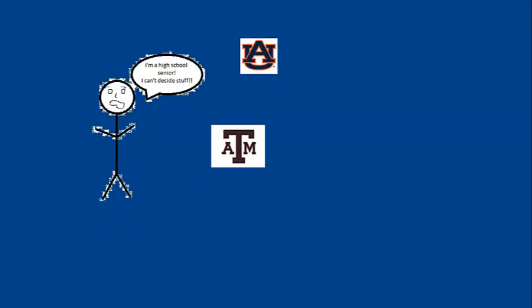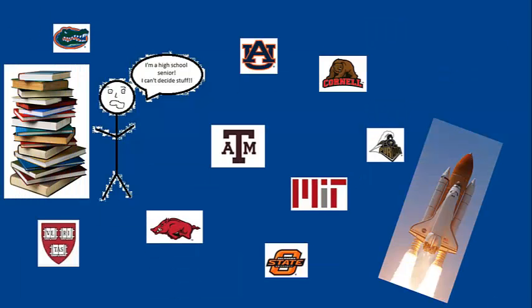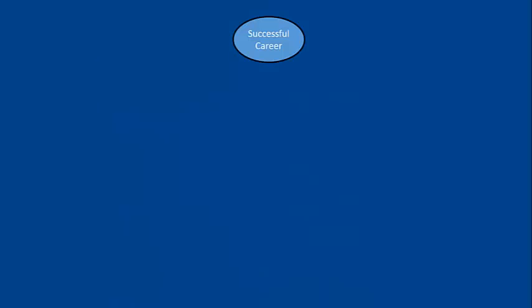Imagine that you are a high school senior about to graduate and go to college. You're about to determine the course of the rest of your life. Your goal is to be successful, right? More specifically, perhaps, your goal is to get a job doing something that you love. How do you get to the end goal of having a successful career that you enjoy? What path do you take to get there?